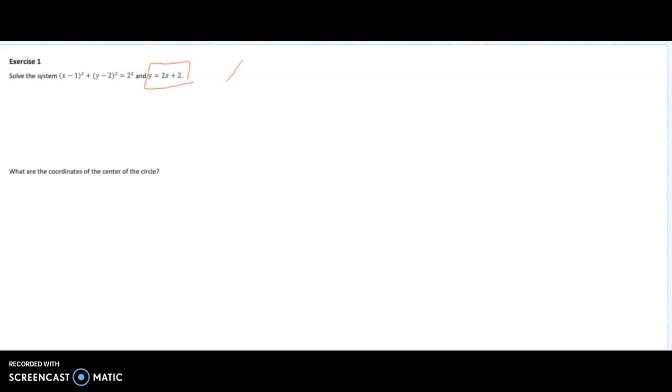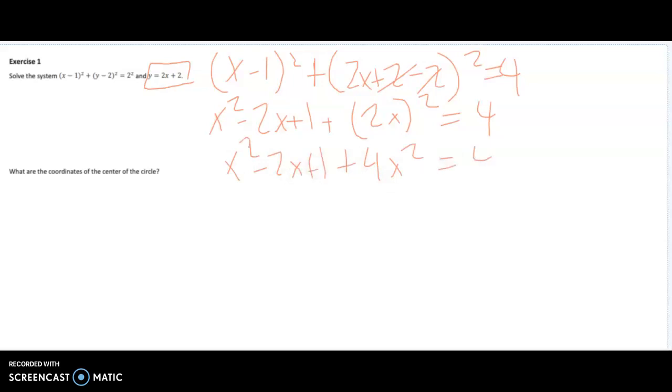So if we do that we get (y minus 1) squared plus (2x plus 2 minus 2) squared and that's equal to 4. Well, this is going to cancel and leave you with 2x squared. And we can do this as x squared minus 2x plus 1 plus that equals 4. So this is 4x squared equals 4.